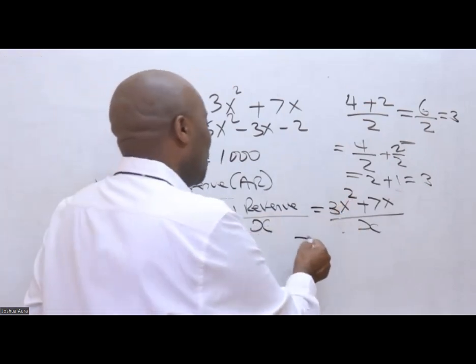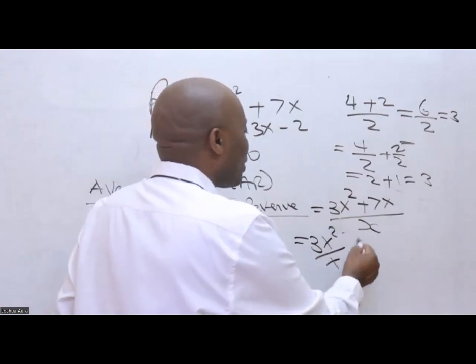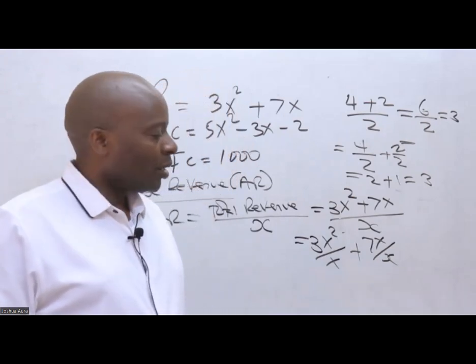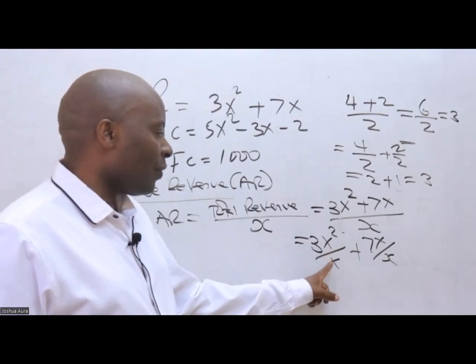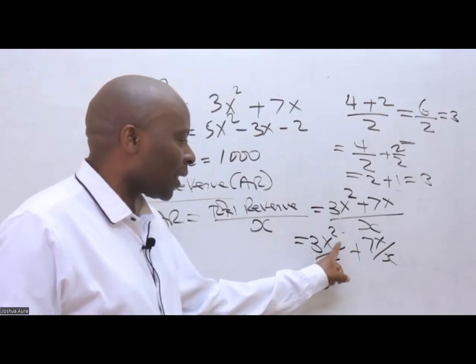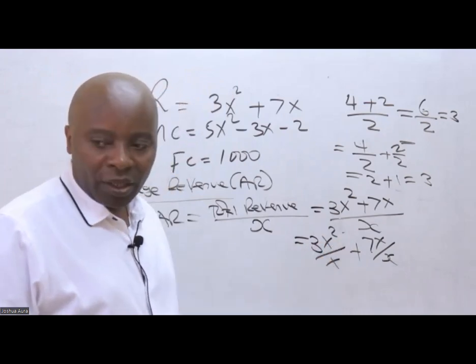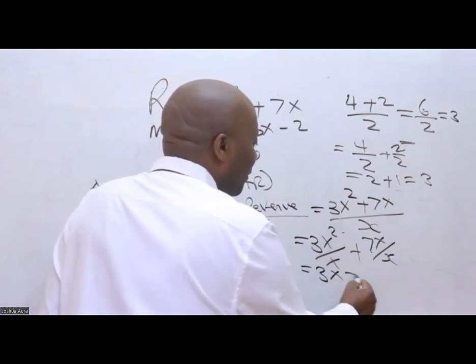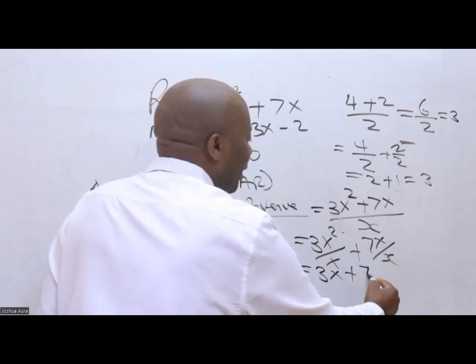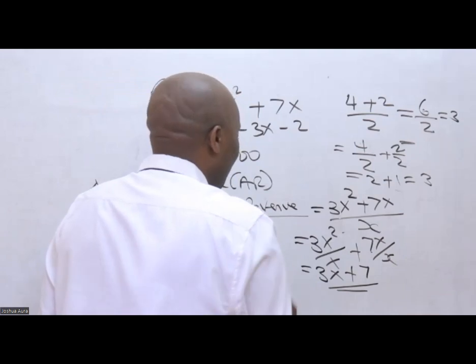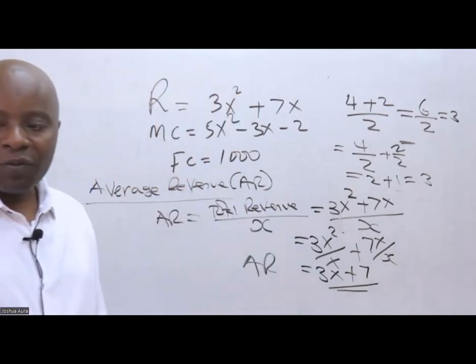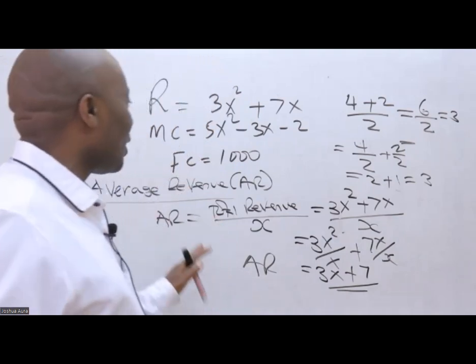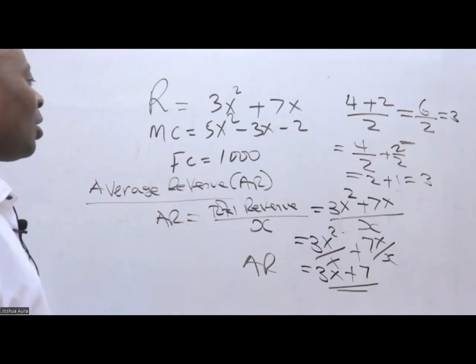So we want to use the same concept here to distribute this to each of the terms. Then what this would mean is that we have 3x squared over x plus 7x over x. In this case, 3x squared divided by x, I know it's x times x, so x times x divided by x. At the end, this will be 3x plus 7. So this is what we call the average revenue. The average revenue is 3x plus 7.